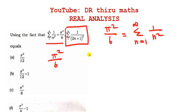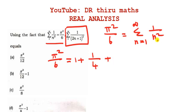In the given fact, on the left side we have pi square by 6. Now we apply n equal to 1, n equal to 2, n equal to 3, n equal to 4, n equal to 5. For n equal to 1: 1 divided by 1 square equals 1 by 1. For n equal to 2: 1 by 2 square equals 1 by 4. For n equal to 3: 1 by 3 square equals 1 by 9. For n equal to 4: 1 by 16. For n equal to 5: 1 divided by 5 square equals 1 by 25.